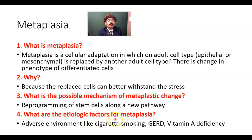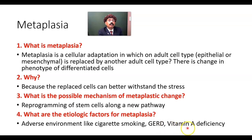What are the etiologic factors for metaplasia? These include adverse environments like cigarette smoking, any type of tobacco smoking, substance abuse smoking, and gastroesophageal reflux disorder. The stomach content will go to the esophagus, and stomach content contains acid that will irritate the lower esophagus, so stratified squamous epithelium will be changed into columnar or gastric epithelium. In case of vitamin A deficiency, there will be squamous metaplasia — pseudo-stratified ciliated columnar epithelium of the lung will be changed into stratified squamous epithelium due to vitamin A deficiency. Vitamin A is very essential for epithelial health.